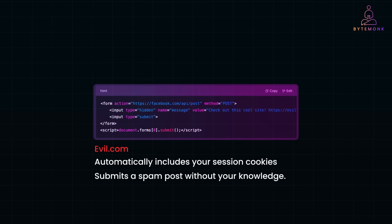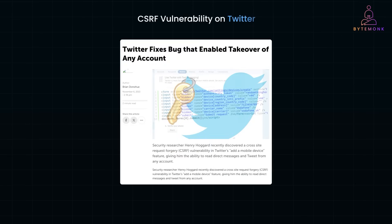In fact, in 2009, a CSRF vulnerability on Twitter allowed attackers to force users to tweet a message without their permission. The attack worked by embedding a malicious script on a webpage. When a logged-in user visited the page, their Twitter account automatically tweeted a spam message. Thousands of users were affected within hours, leading to Twitter quickly patching the issue.